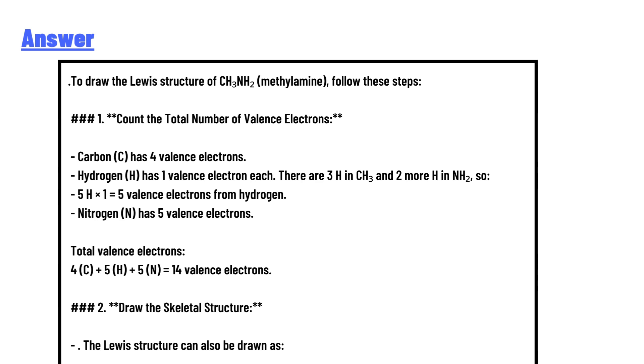Step 2: Draw the skeletal structure. Carbon (C) is bonded to three hydrogens (H) and one nitrogen (N). Nitrogen (N) is bonded to two hydrogens (H) and to carbon (C). Skeletal structure: H3C-NH2.